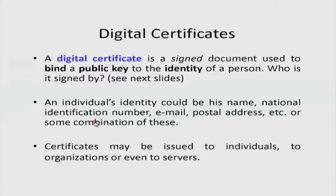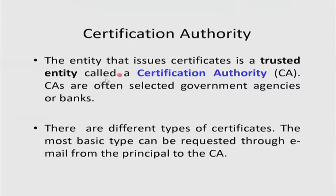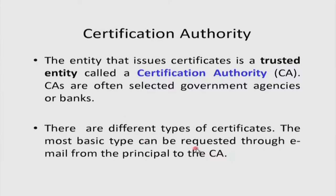In some countries, you have a national identification number or social security number which uniquely identifies a person — no two people have the same national identification number. Certificates may be issued to individuals, to organizations, or even to servers. A web server can have a certificate as we have seen in the SSL protocol. VeriSign or certain company XYZ can have a certificate. The entity that issues certificates is a trusted entity called a certification authority, or CA — often selected government agencies or banks.